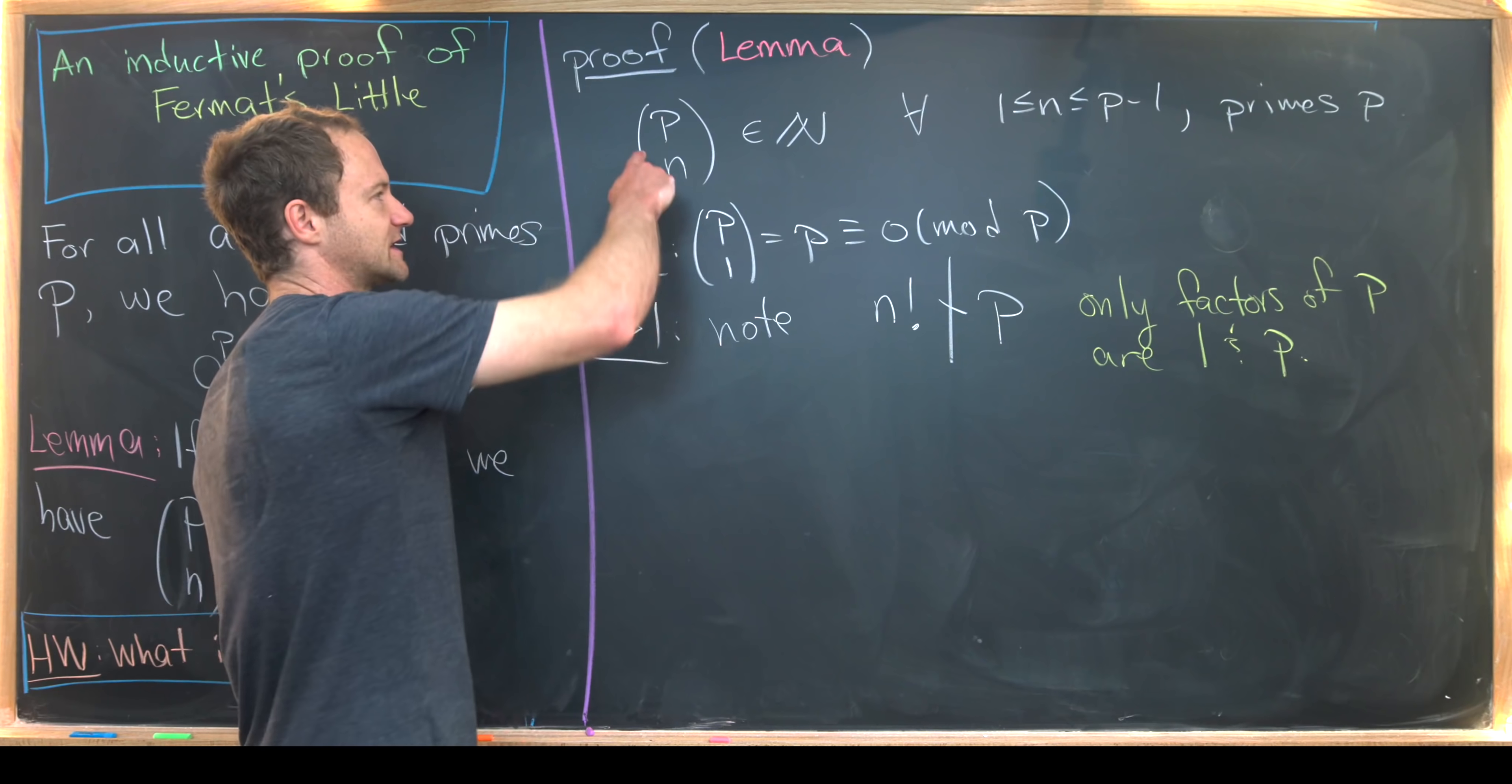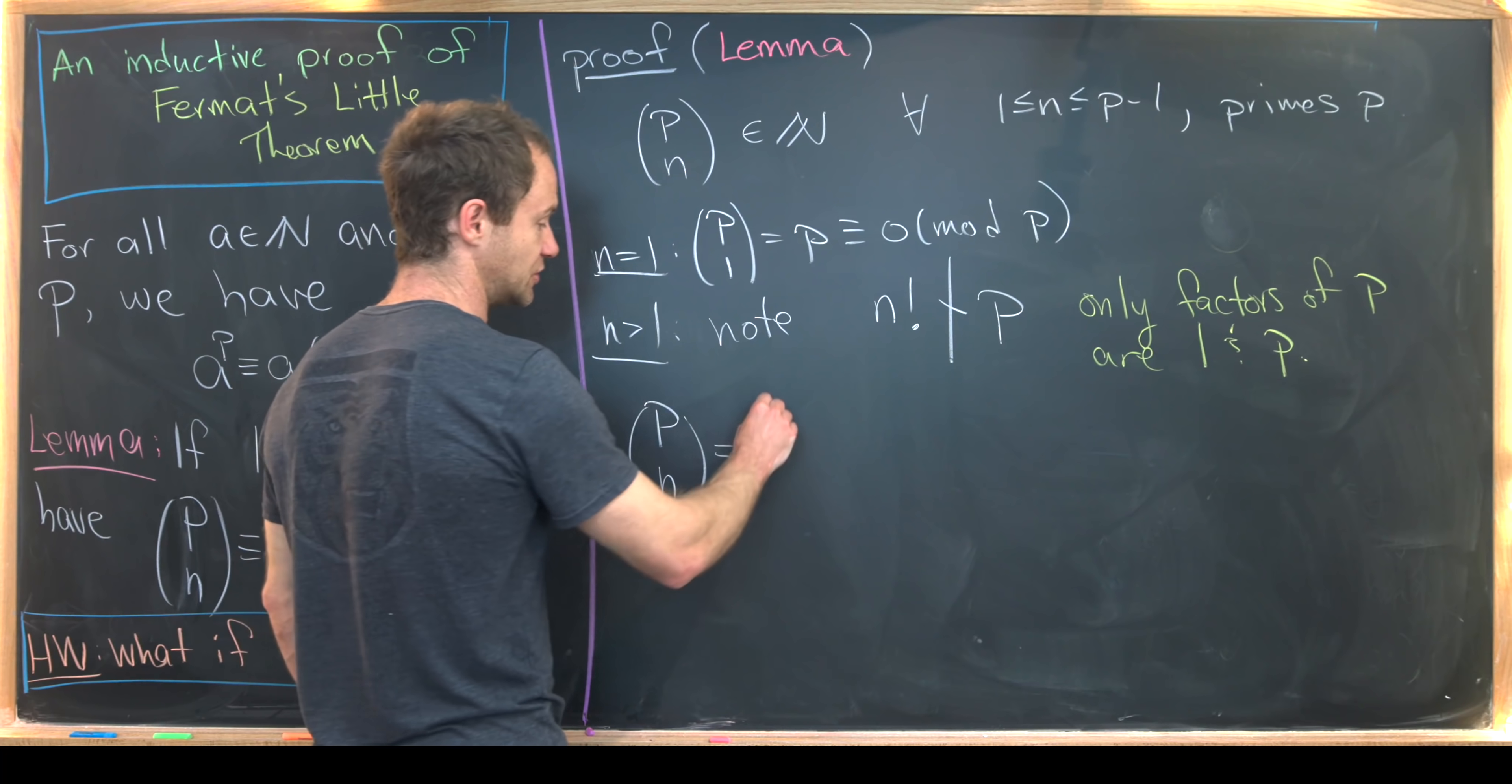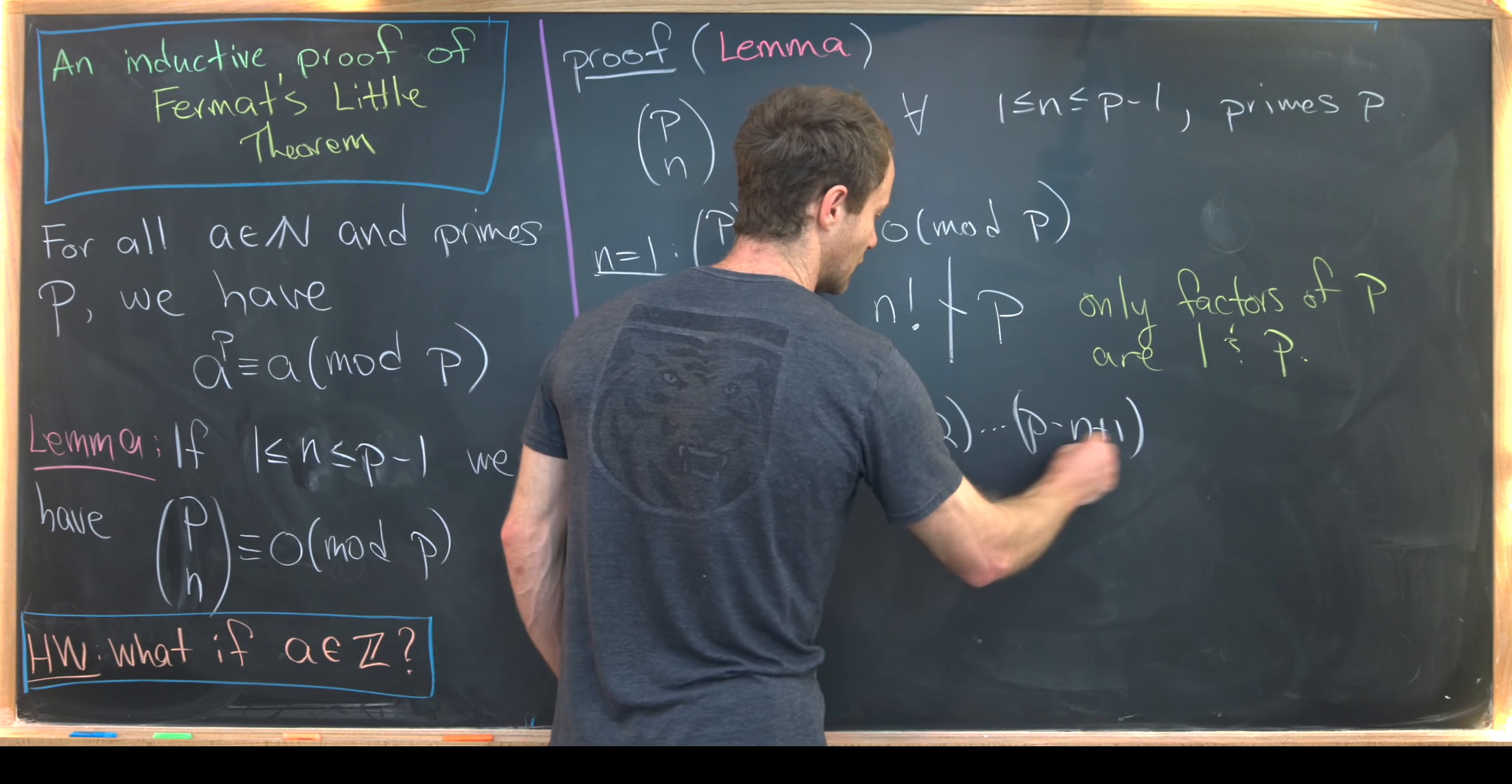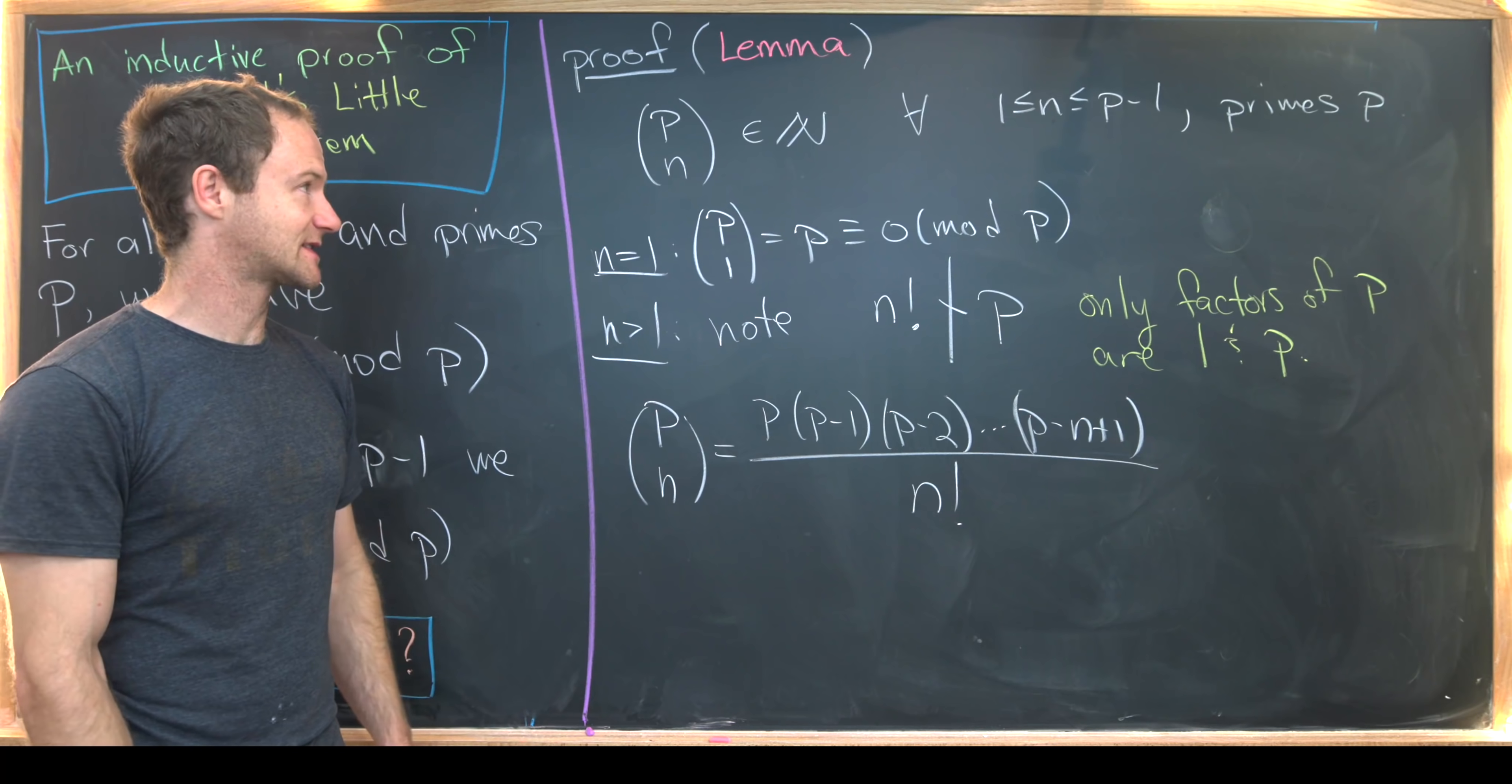Okay, so now let's go from there. Let's take this and rewrite it via its definition. So P choose N is equal to P times P minus 1 times P minus 2 all the way down to P minus N plus 1 all over N factorial.